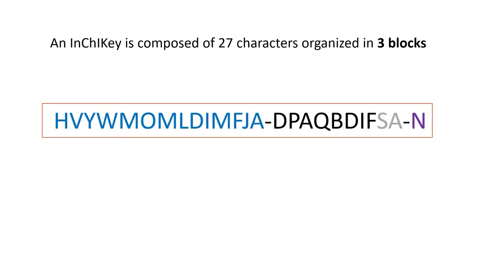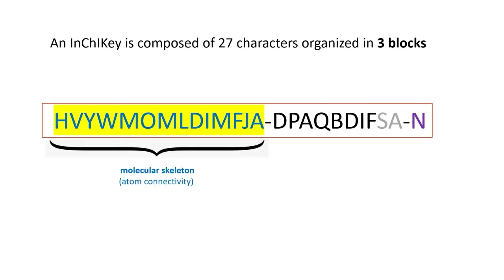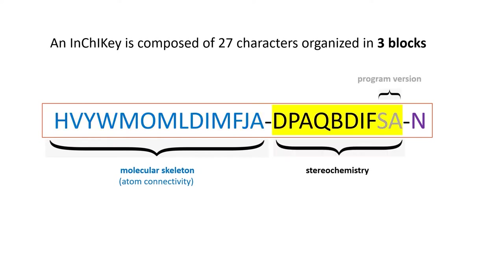An INCHI key is composed of 27 characters organized in three blocks. The first block encodes information about the molecular skeleton and atom connectivity, the second information about the stereochemistry, and the third block information about the charge of the molecule.